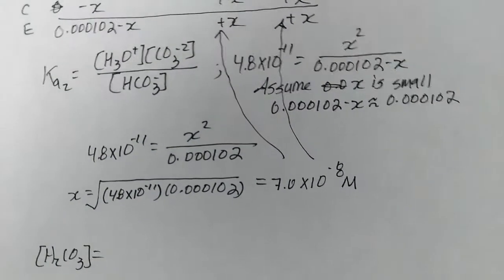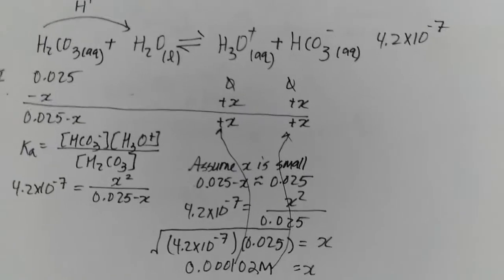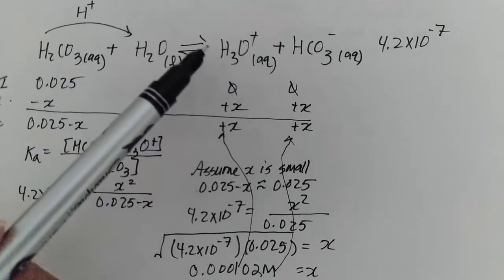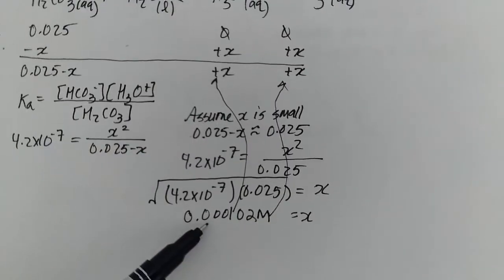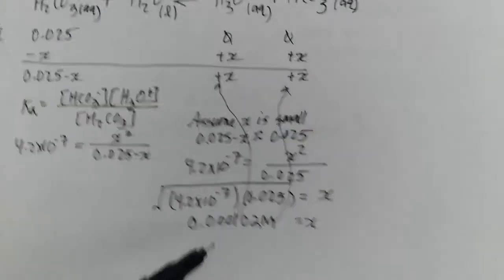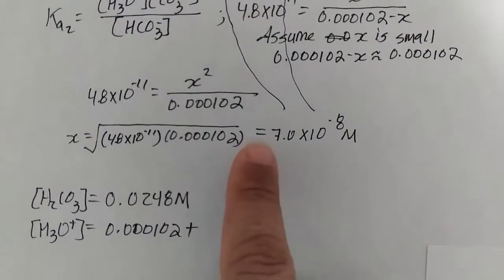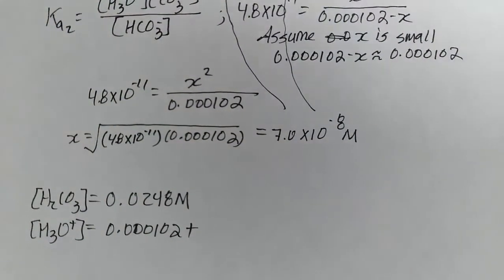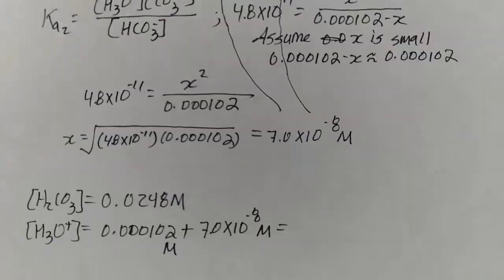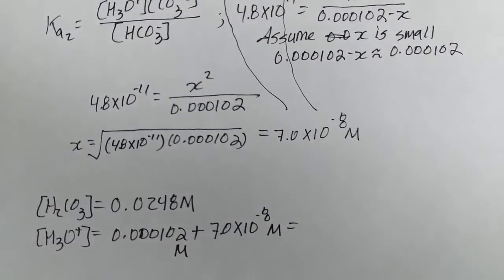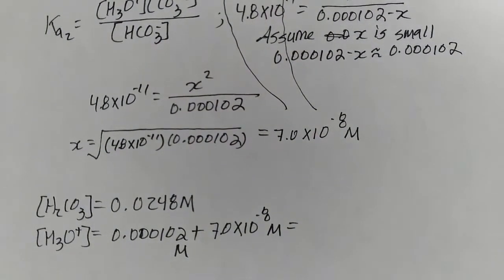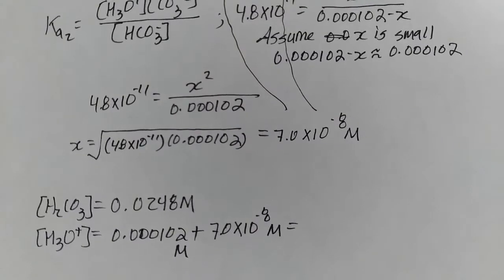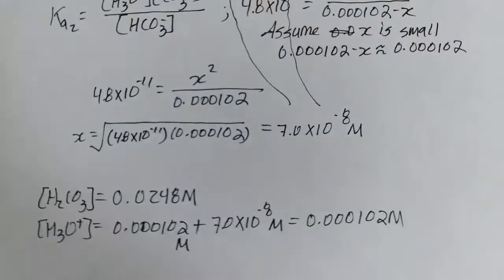The concentration here from the first ionization of H3O+ is 0.000102, plus the concentration we found here, which is 7.0 × 10^-8. Again, very very negligible. Let's add that up in our calculator for posterity's sake. When I thought 10^-8 is really nothing.